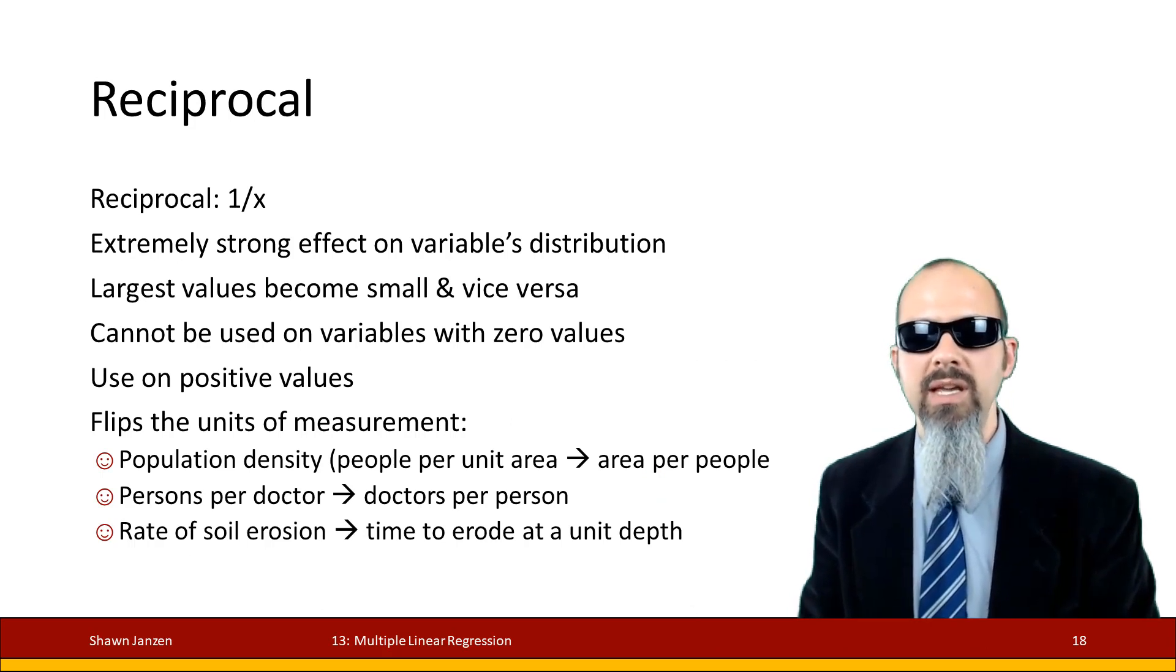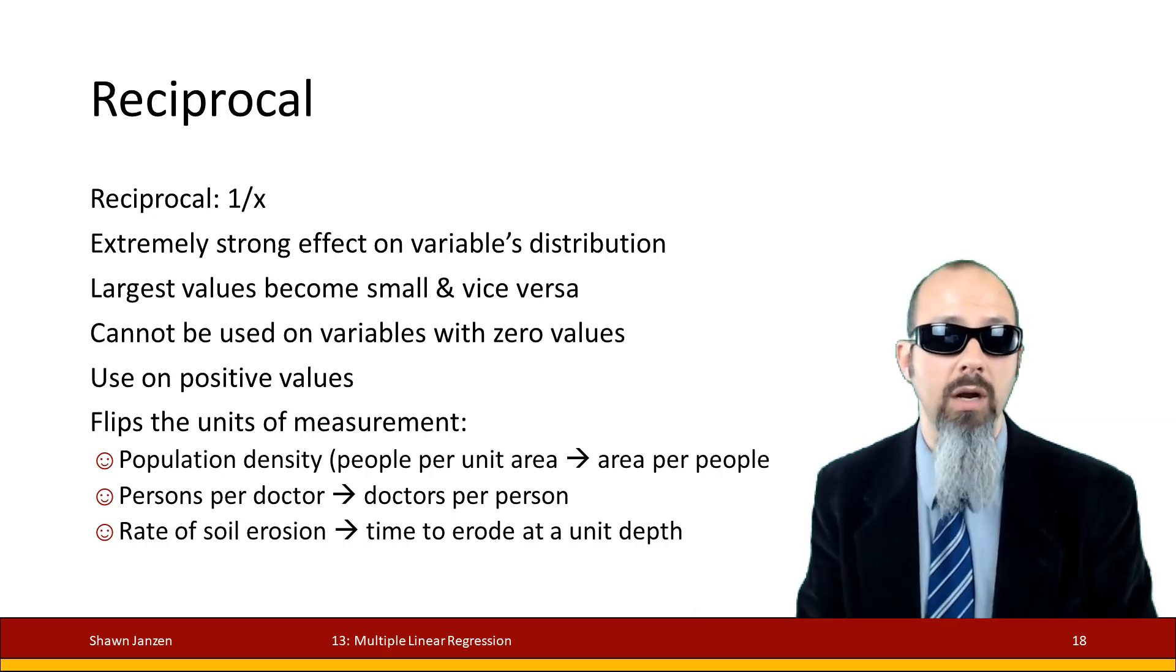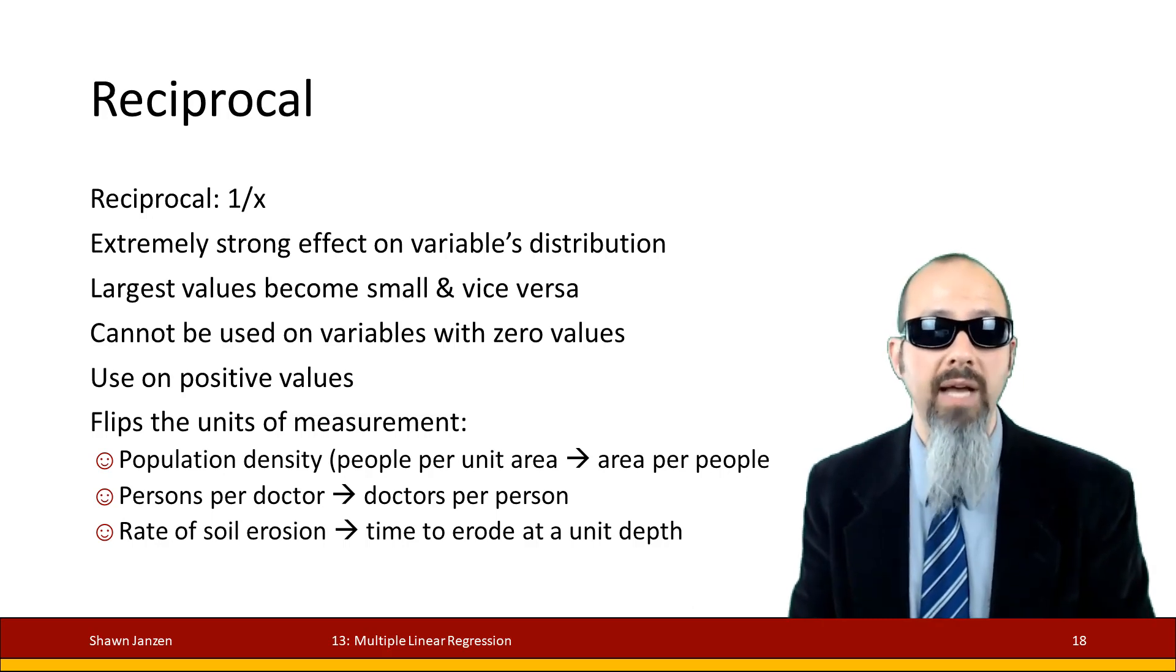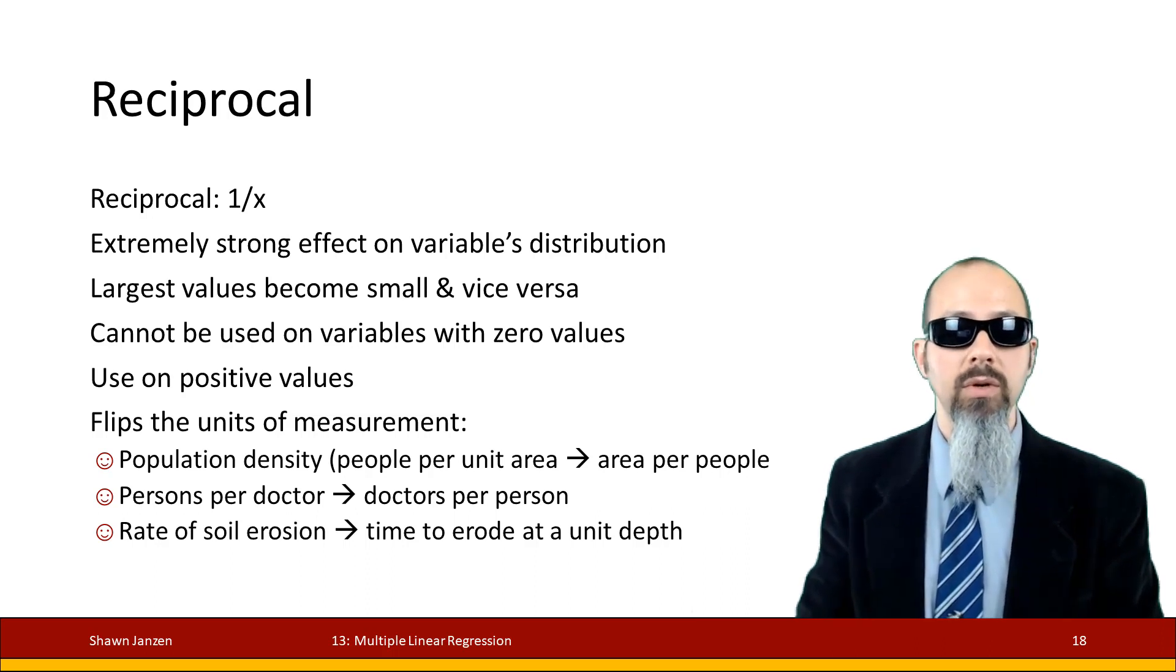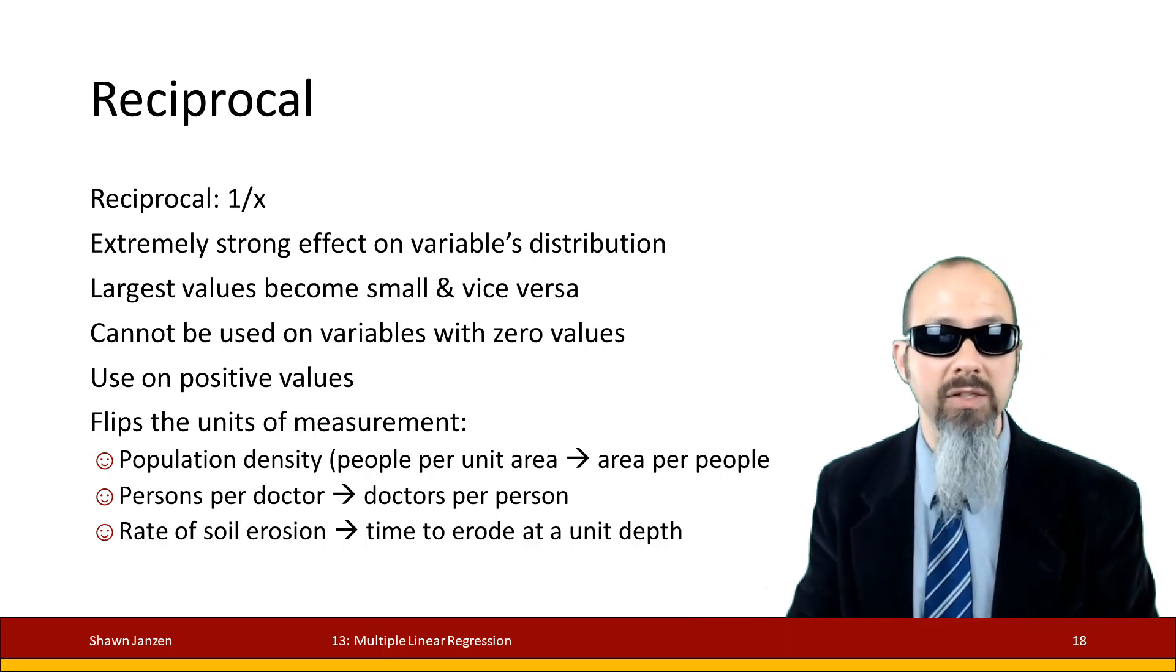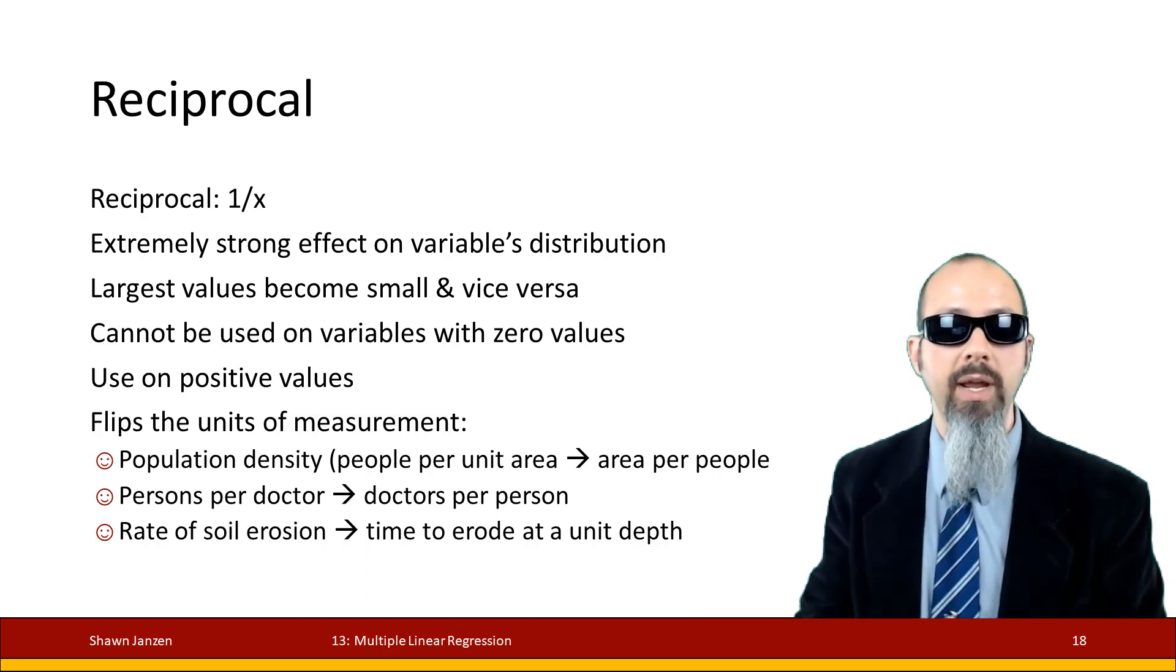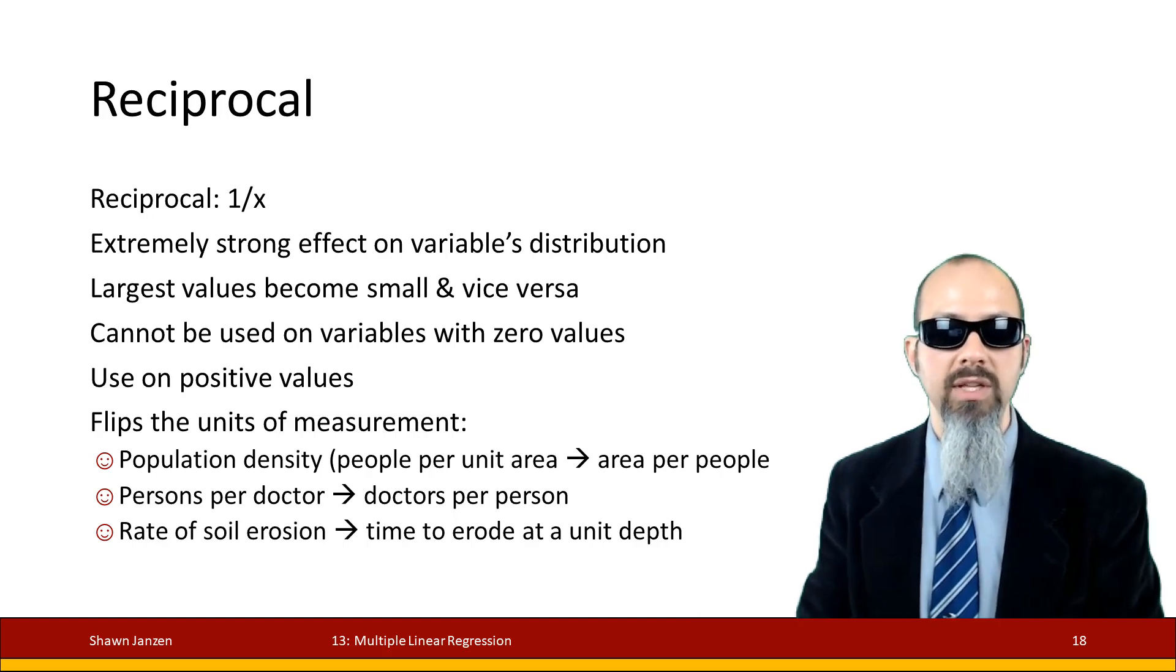Now reciprocal here, this is going to be an extremely strong transformation effect. It's taking a 1 over x and it drastically changes a variable's distribution. By that, I mean that the big values become small values and the small values become big values because you are taking a reciprocal of each particular one. You can't use this on zero values, otherwise the universe is going to implode. But you can use it on things that are positive. And when you do the reciprocal, it's going to flip the unit of measurement. For example, things that were originally population density, which you could say people per area, like people per block, people per mile, it then becomes area per person or blocks per person, square miles per person, et cetera. Or if we were to say people per doctor, then it becomes doctors per person. If we were talking about the rate of soil erosion, it would become the time at which it takes to erode at a certain depth of soil erosion.